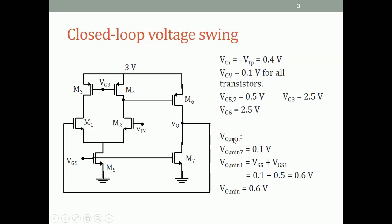With these numbers let us find VO_min and VO_max. VO_min is determined by M7 and also by M1 and M5. Due to M7, because the overdrive is 0.1 V, the lowest voltage is 0.1 V. Due to M1 and M5, the lowest voltage at the gate of M1 is the overdrive of M5 (0.1 V) plus VGS of M1 (0.5 V) = 0.6 V. Taking the higher of the two, VO_min is 0.6 V.